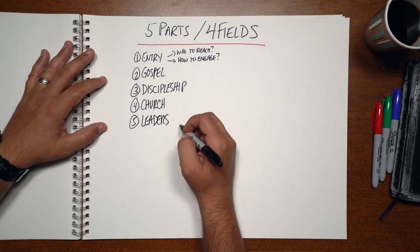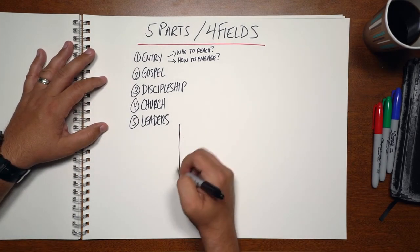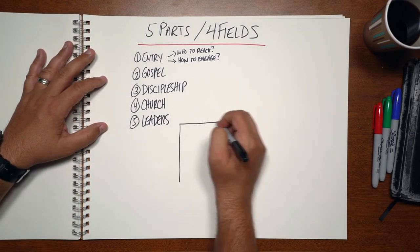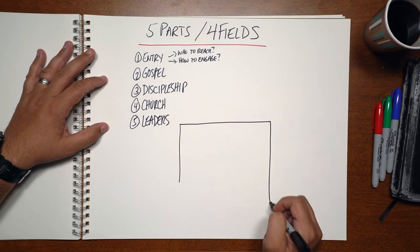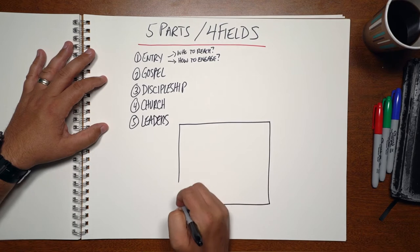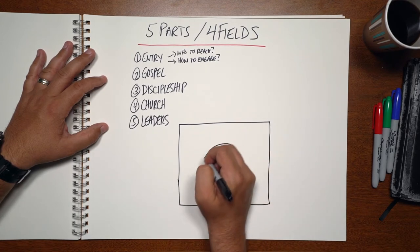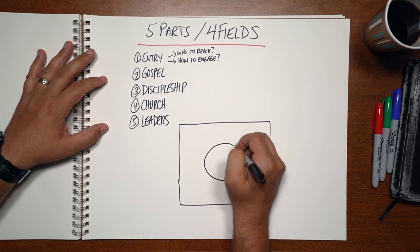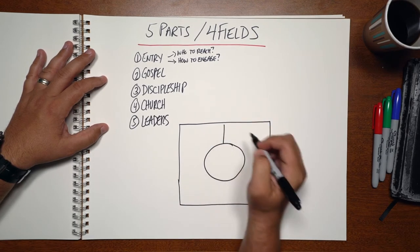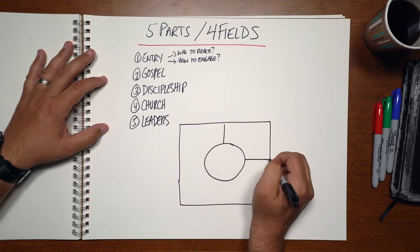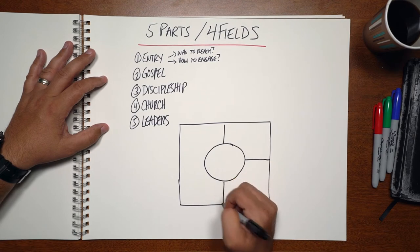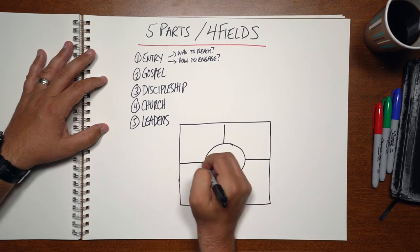Now to help us remember, we're going to illustrate these five parts in a drawing called the four fields. This came out of a movement in Asia.